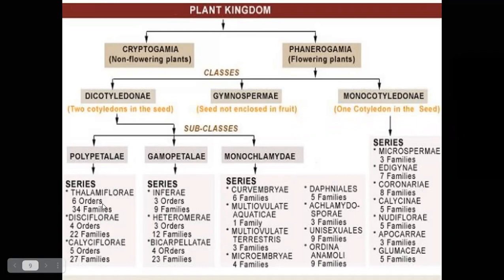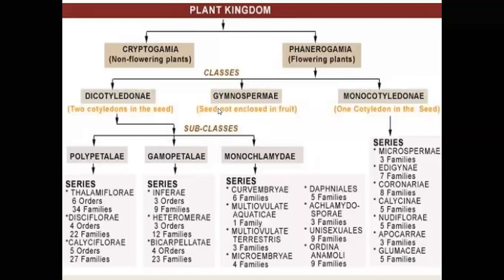Further merits include the position of heteromerae before bicarpellatae, and the placement of monocotyledons at the end of the dicots. The demerits are: in polypetale, the classification follows hypogynous, perigynous, and epigynous order, but in gamopetale this system was not followed — epigynous plants were placed first. Also, monochlamidae and monocotyledons are classified directly into series without orders. Additionally, no reason was given for placing gymnosperms between dicotyledons and monocotyledons. Gymnosperms were classified into only three families: Cycadaceae, Coniferae, and Gnetaceae.